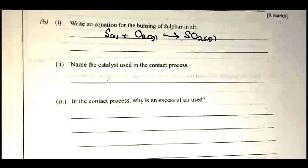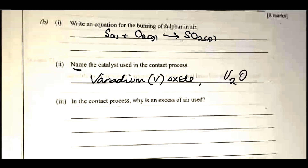Name the catalyst used in the contact process. That is vanadium pentoxide, with the formula V₂O₅, used in the contact process.